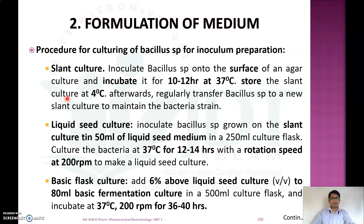The slant is regularly transferred to new slant to maintain the bacterial strain. In the liquid seed culture method, Bacillus species grown on a slant culture are inoculated into 50 ml of liquid seed media in a 250 ml culture flask, then cultured at 37°C for 12 to 14 hours with a rotation speed of 200 rpm.